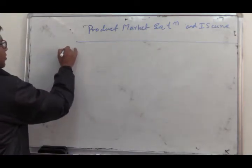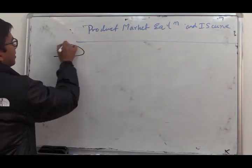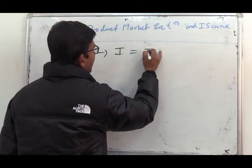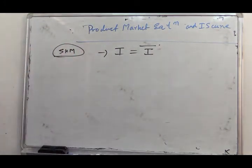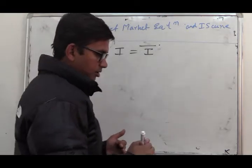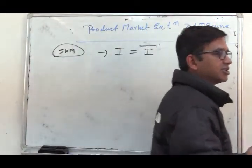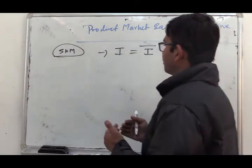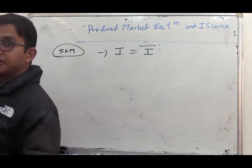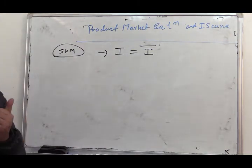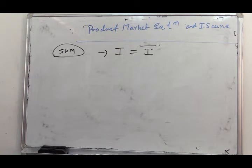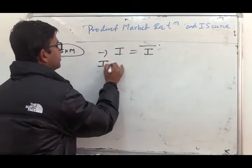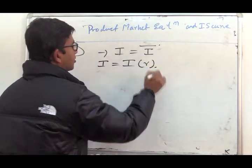In the simple Keynesian model, we consider private investment as autonomous, and we don't consider any interaction of commodity and money markets. But in reality, we have to consider the money market. In reality, private investment is not an autonomous variable. Rather, it is more realistic to say that private investment is a function of the rate of interest.